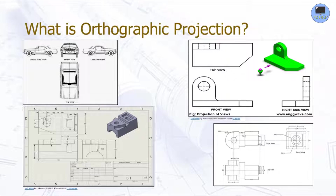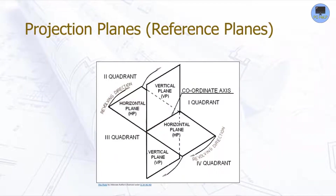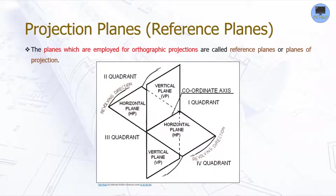Usually the front side, left or right, and plan view — also referred to as the top view — are drawn so that a person looking at the drawing can see all the important sides. The planes employed for orthographic projections are called reference planes or planes of projection.